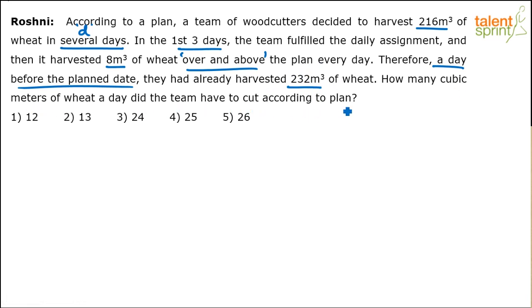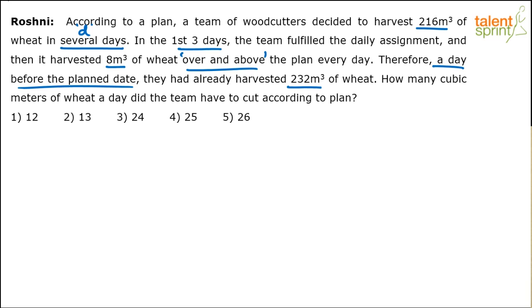The question is: how many cubic meters of wheat per day did the team have to cut according to the plan? Total work to be done is 216, decided to be done in d days. First three days they worked accordingly; after that they increased their capacity by 8 cubic meters extra per day, ending up doing 232 total work in one day less than the planned d days. What was the initial plan — how many cubic meters per day?